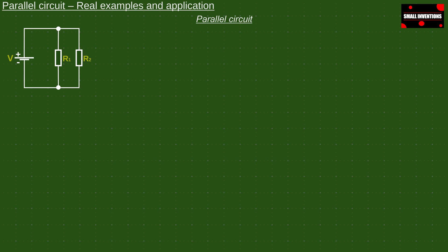As you can see, a parallel circuit consists of a power supply and a minimum of two or more consumers, in our case two resistors.